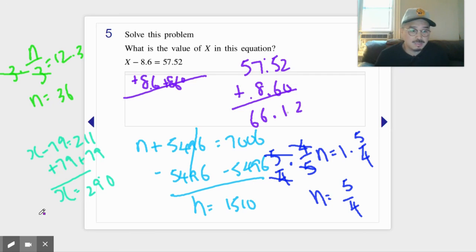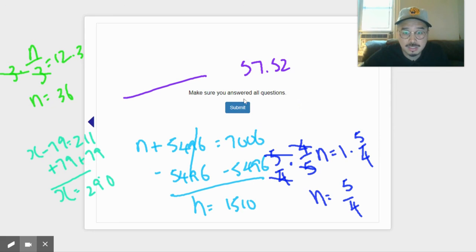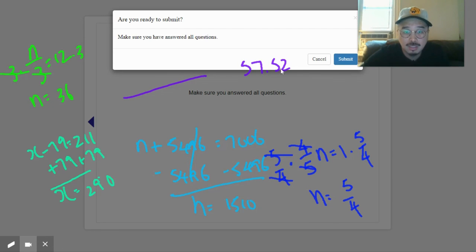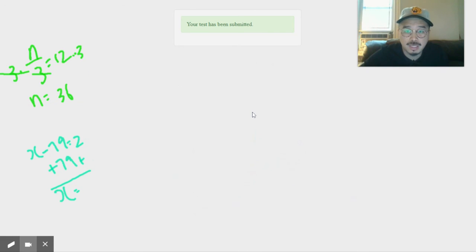Now let me enter that into the keyboard. Sixty-six point twelve. Press next, I'm gonna submit. I submitted them, and that's it.